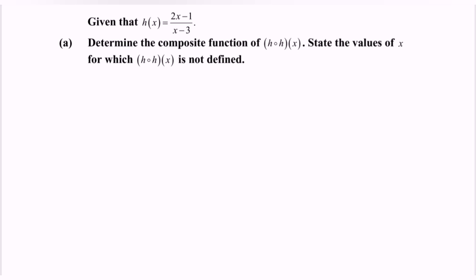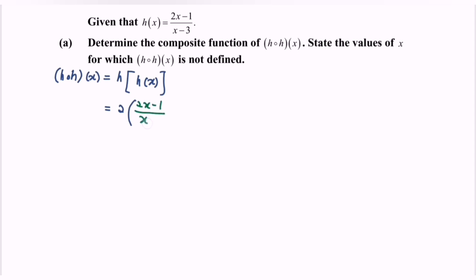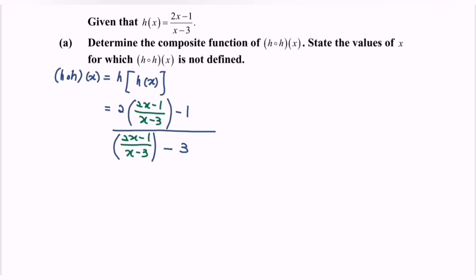To determine the composite function h∘h, we have h∘h(x) equals h(h(x)), meaning we substitute h(x) into itself. So we substitute (2x minus 1) over (x minus 3) in place of x, giving us 2 times [(2x minus 1)/(x minus 3)] minus 1, all over [(2x minus 1)/(x minus 3)] minus 3. We then equate the denominators for both the numerator part and denominator part.